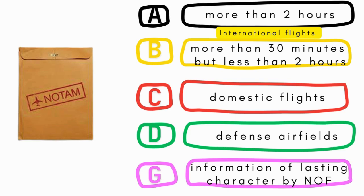NOTAMs should not remain in force for more than three months. Let's discuss different types of NOTAMs. Series A contains information on changes or unserviceability of aeronautical facility, procedures, or hazards likely to last more than two hours, in respect of locations of direct importance to international aircraft operations.